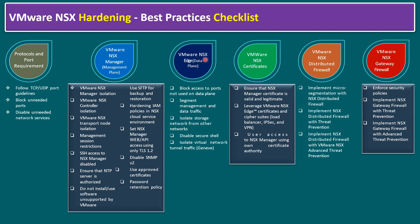NSX Edge covers the data plane. Under the data plane: block access to ports not used on the data plane, segment management and data traffic, isolate the storage network from other networks, disable Secure Shell, and isolate virtual terminal traffic. GENEVE stands for Generic Network Virtualization Encapsulation.